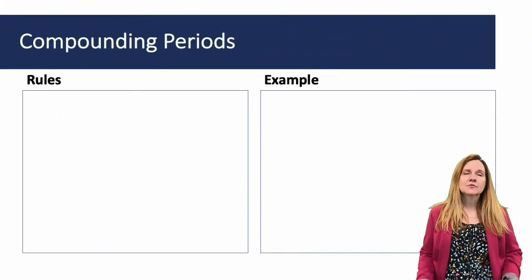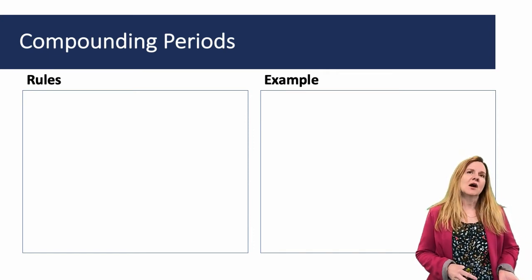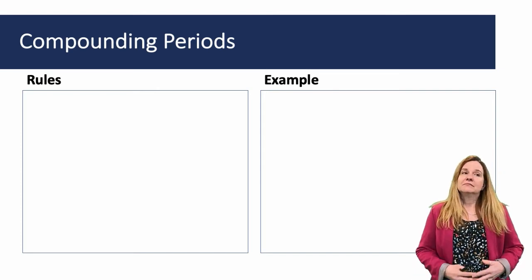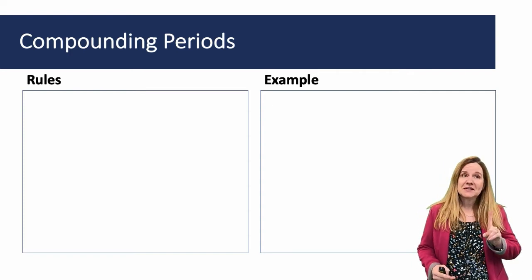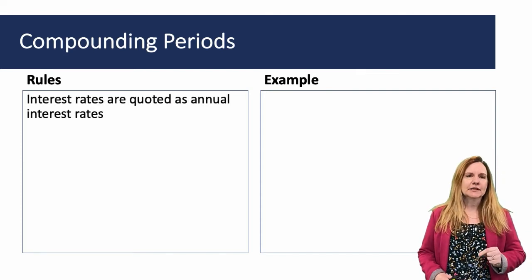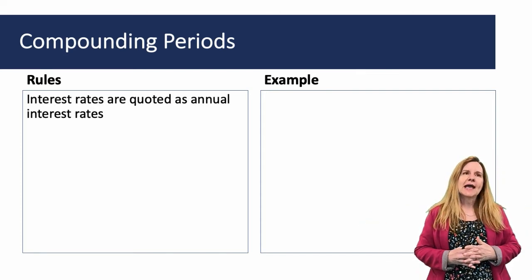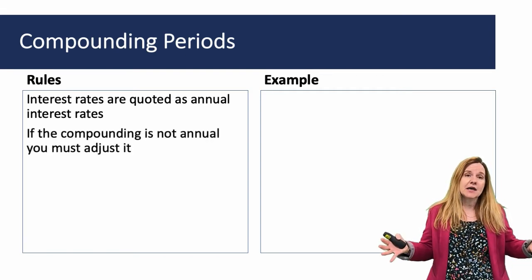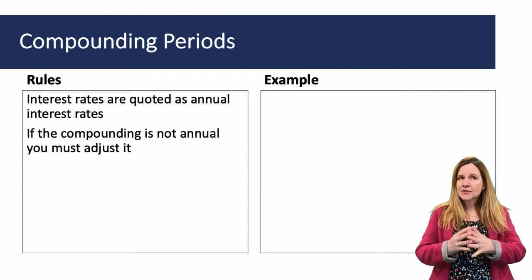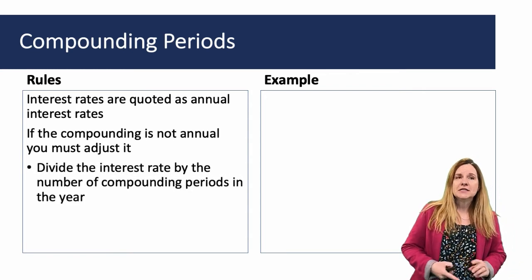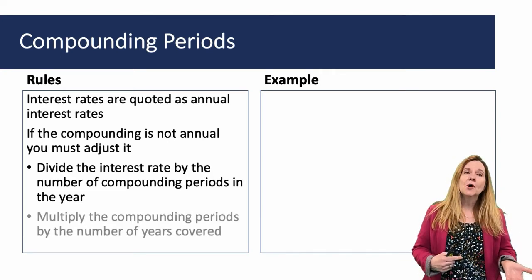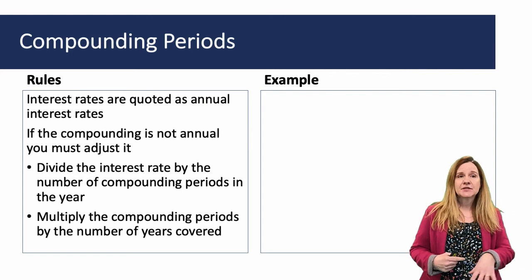We just went over how to calculate annuities. We've been focusing on annual annuities and annual compounding periods. Many times, though, if you have a car loan, you don't only make one payment a year — you make a payment every month. Interest rates are quoted annually, so if we're looking at monthly payments, we need to turn it into a per-month interest rate. To do that, we divide the interest rate by the number of compounding periods. If you're paying every month, we'd divide by 12.